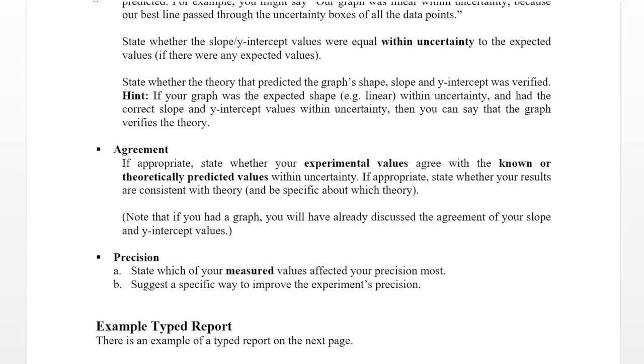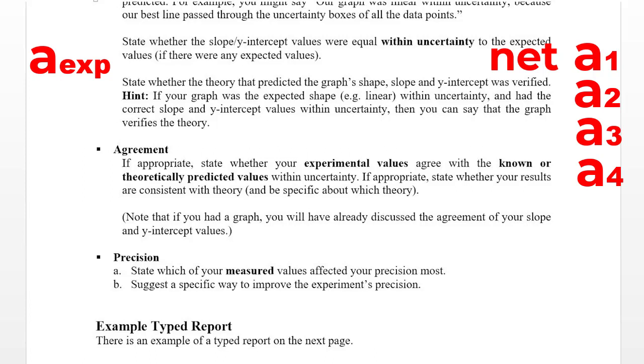So what you'll start with instead is discussing the agreement of your values. So do these two numbers agree within their limits of uncertainty? In the case of the acceleration on an incline experiment, you would be comparing your one measured acceleration value to the four theoretically calculated acceleration values.